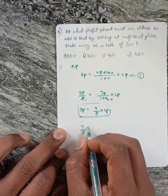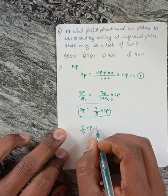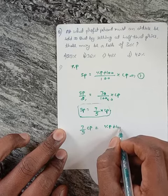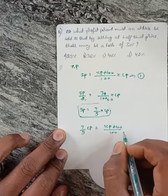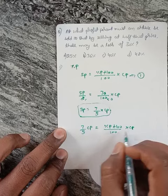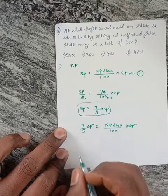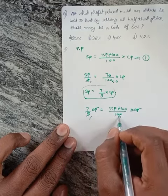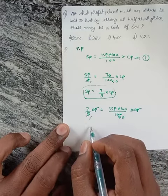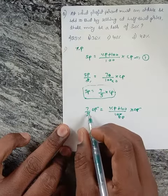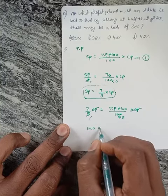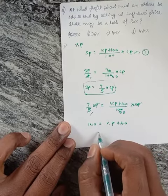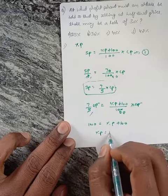7 by 5 cost price equals profit percentage plus 100 divided by 100 into cost price. Cost price cancels, so cost price equals profit percentage plus 100. Profit percentage equals 40.